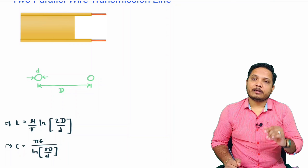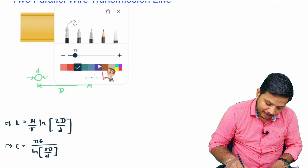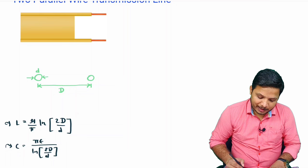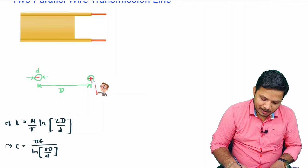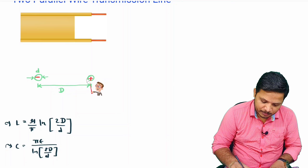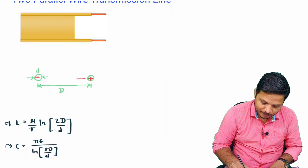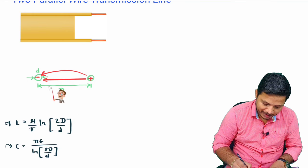Now I will explain the electric field pattern and magnetic field pattern for the two parallel wire transmission line. The electric field is based on current polarity. If one wire has positive current — current coming out of the page — and the other has negative current — current going into the page — then the electric field emerges from the positive current and gets enclosed to the negative current.